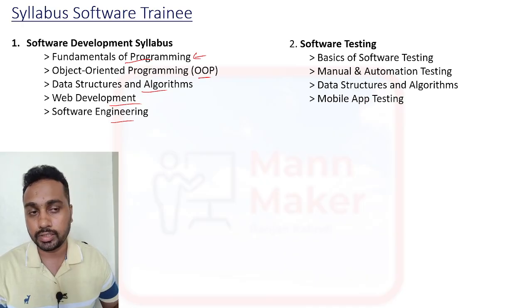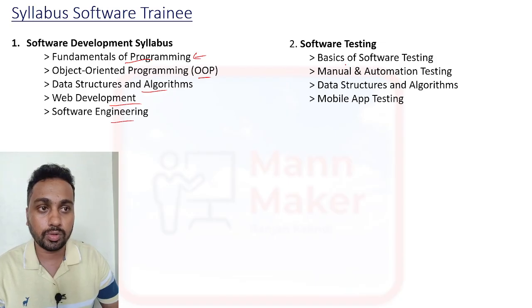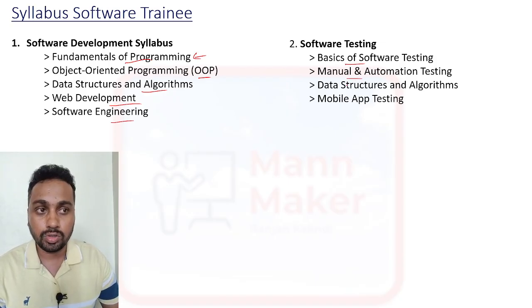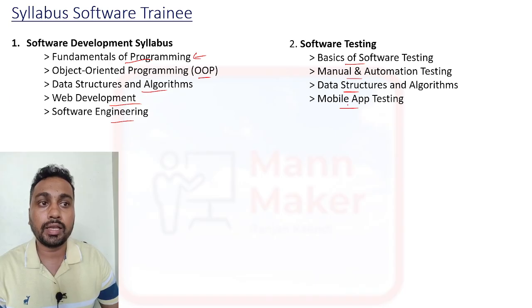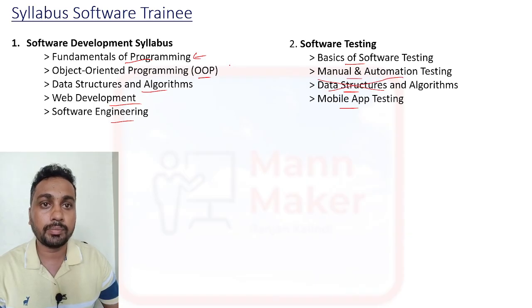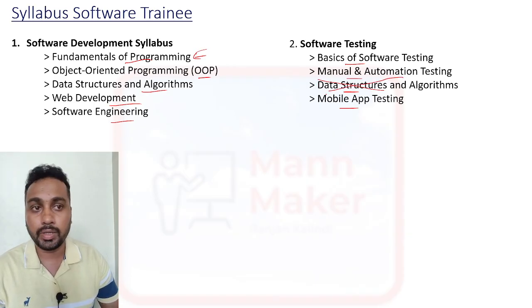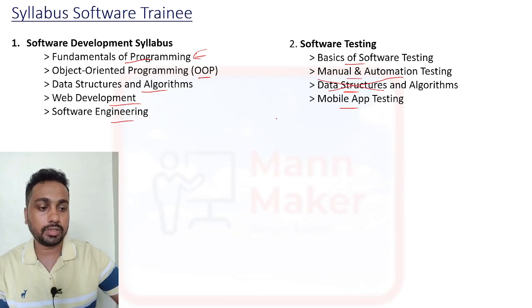Module 2 is Software Testing. From Software Testing, you are going to get questions from basic software testing, manual and automation testing, and mobile app testing. Note: Data Structures and Algorithms is not part of this module — that is part of Software Development. I mentioned it here by mistake.